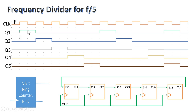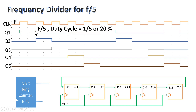Q1 is a periodic signal whose period equals 5 clock periods of the input clock signal. Since the input clock has frequency F, Q1 has a frequency of F by 5, which is our requirement. Similarly, signals Q2, Q3, Q4, and Q5 all have frequency F by 5. The duty cycle is the on-time divided by the total period — 1 clock cycle out of 5 — giving a duty cycle of 1/5, or 20%.